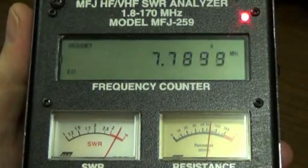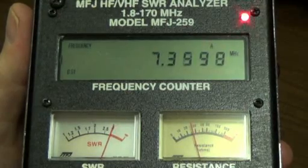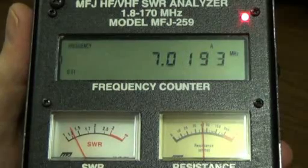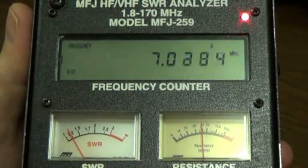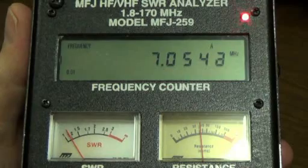Here I'm at 8.4, 8.0, tuning down toward 40 meters at 7.3. It begins to drop at 7.3. I reach my low point at 7.054, which means the antenna is resonant at that frequency.